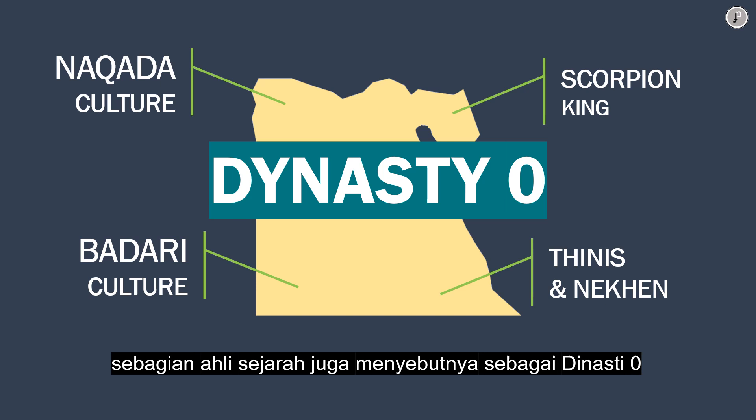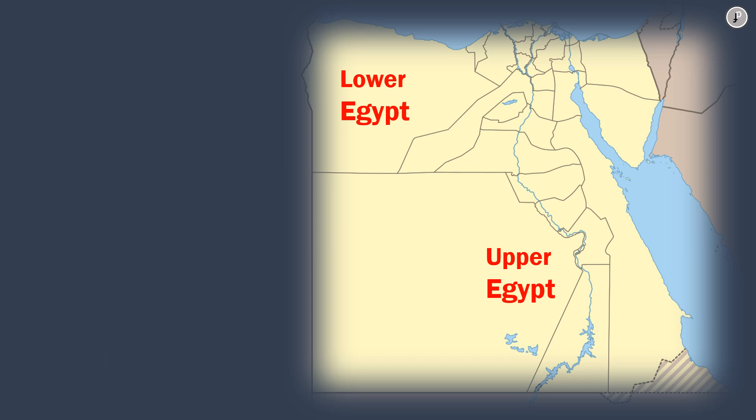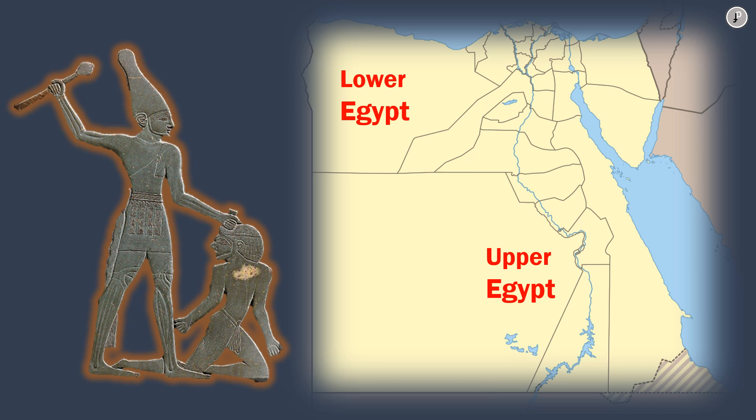During the Dynasty Zero period, ancient Egypt was divided into two areas: Upper Egypt and Lower Egypt. The first recorded leaders were in Upper Egypt, until a leader that united Egypt under one rule emerged. He is Narmer, the first pharaoh.